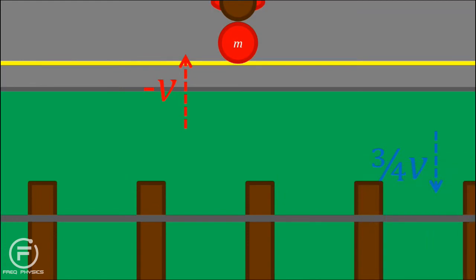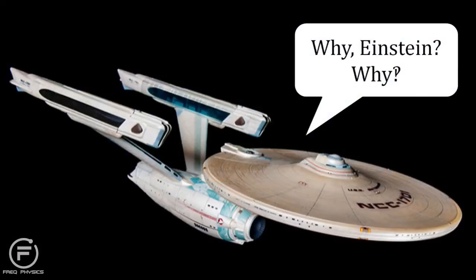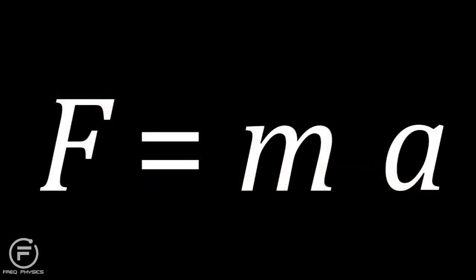Looking at this from the frame of reference of the train, the same happens, except the mass of the red ball is now larger. This is where the bane of sci-fi accuracy comes from. As you approach the speed of light, your mass increases, and so the force required to accelerate you also increases.